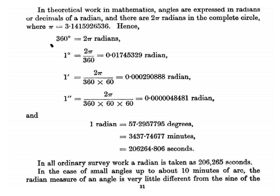Similarly, 1 second equals 2π divided by 360 multiplied by 60 multiplied by 60, which equals 0.00000484 radians. And 1 radian equals 57.295 degrees, 1 radian equals 3437.74 minutes, and 1 radian equals 206264.806 seconds. Therefore in ordinary work, 1 radian is taken equal to 206265 seconds.